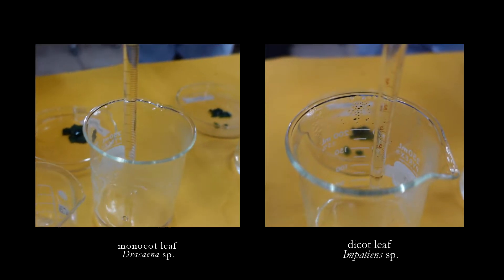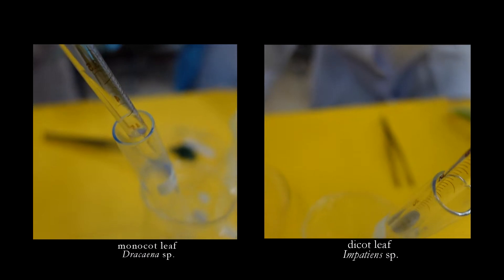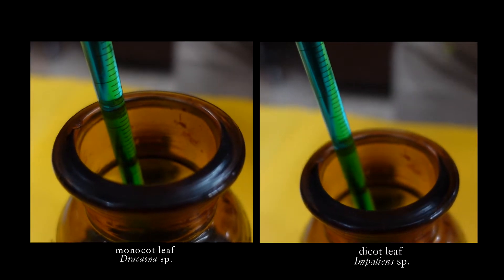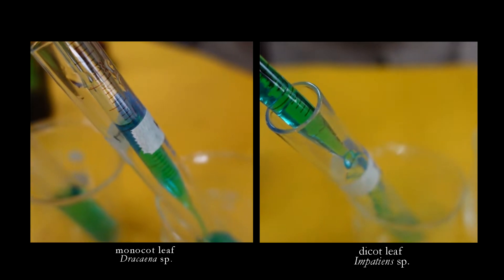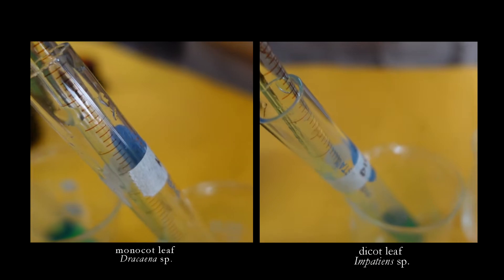In this test, transfer 3 ml of the monocot leaf extract into a test tube and then add the same volume of Benedict's reagent into the test tube. Do the same for the dicot leaf extract.